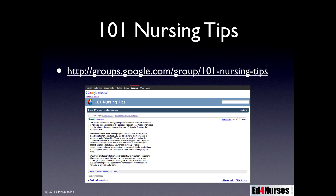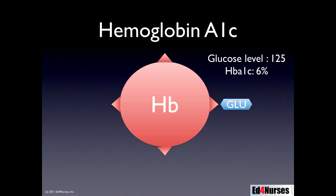Our nursing tip today is going to be on hemoglobin A1C. Hemoglobin A1C is the amount of glucose that is bound up to hemoglobin. Glucose is going to bind up to hemoglobin in the greatest concentration that it ever was — in other words, the higher the concentration of glucose, then the greater the hemoglobin A1C. What we're measuring is the amount of hemoglobin that is glycated, or in other words, that has glucose attached to it.